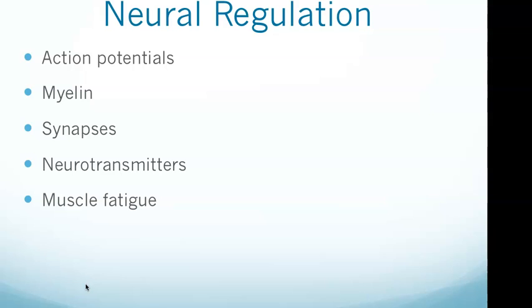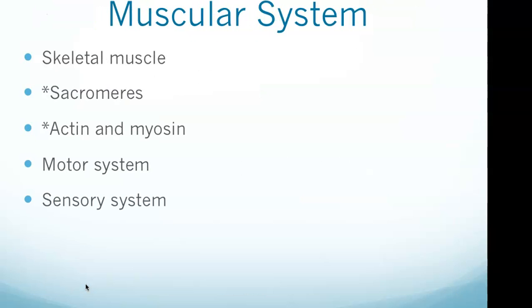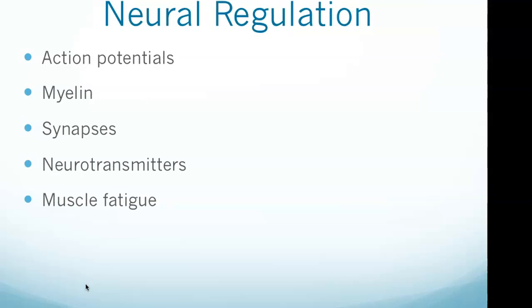A synapse allows a neuron to send a chemical signal to another neuron. A synapse is the space between a terminal branch of a neuron and another neuron — that was question five. A neurotransmitter is released at the synapse; an example of a neurotransmitter is dopamine.